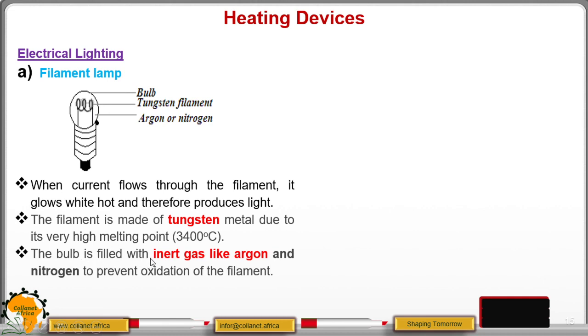Now the bulb is filled with inert gas like argon and nitrogen. And the purpose of these inert gases is to prevent oxidation of the filament.